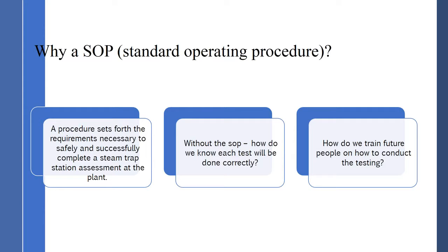Another big advantage of having an SOP is how do we train people in the future for doing the testing — how do we pass down this knowledge? Once an SOP is developed, it's always a continuing, evolving document, meaning the people in control of it are continually adding to and improving it. New people coming on will have a document to make sure they're doing the test correctly and repeating each test. An example: when you board an airplane, a pilot with 25 years of experience is still going through his checklist — his SOP — to safely get the plane in the air.